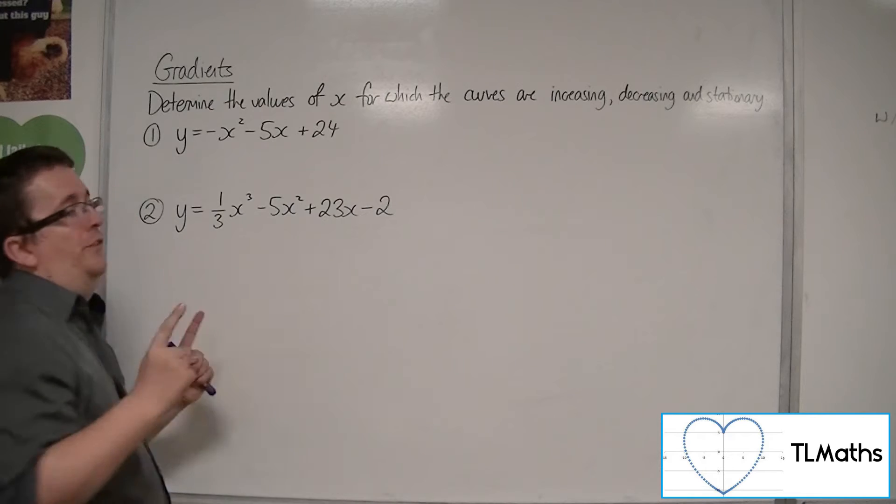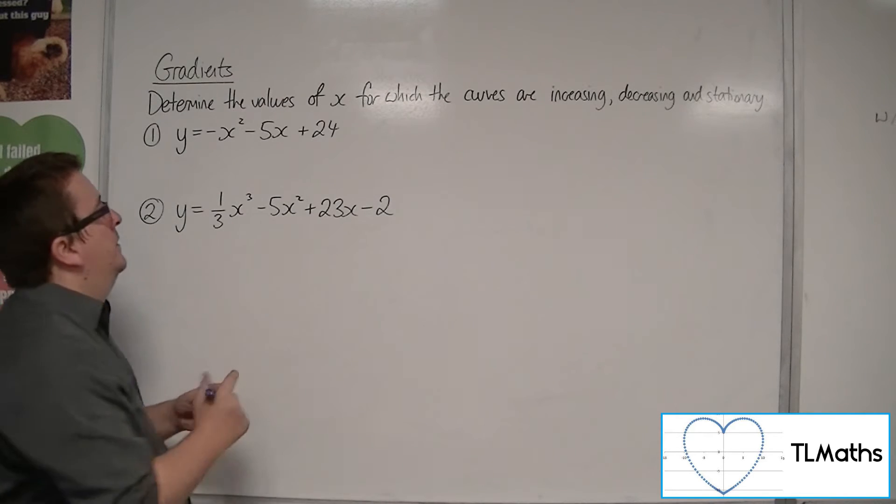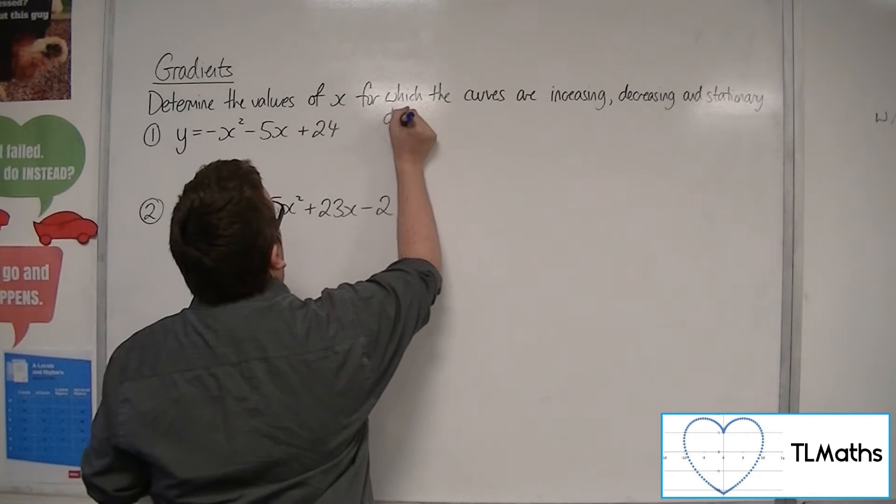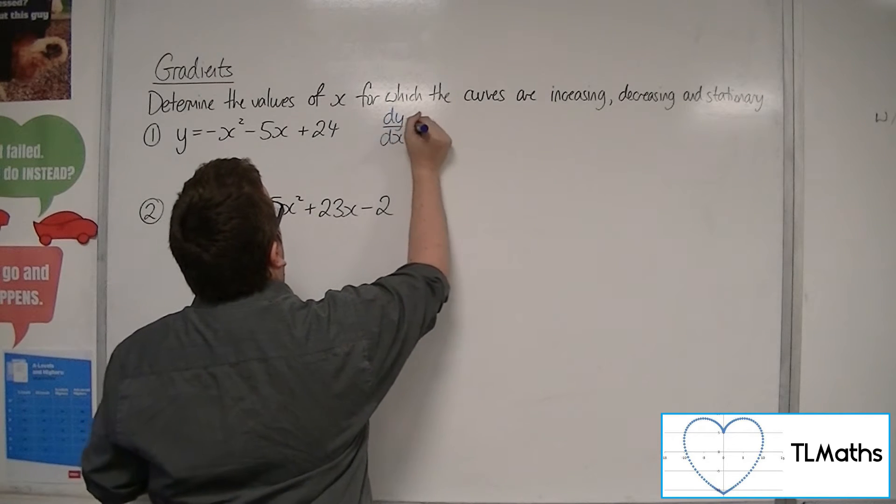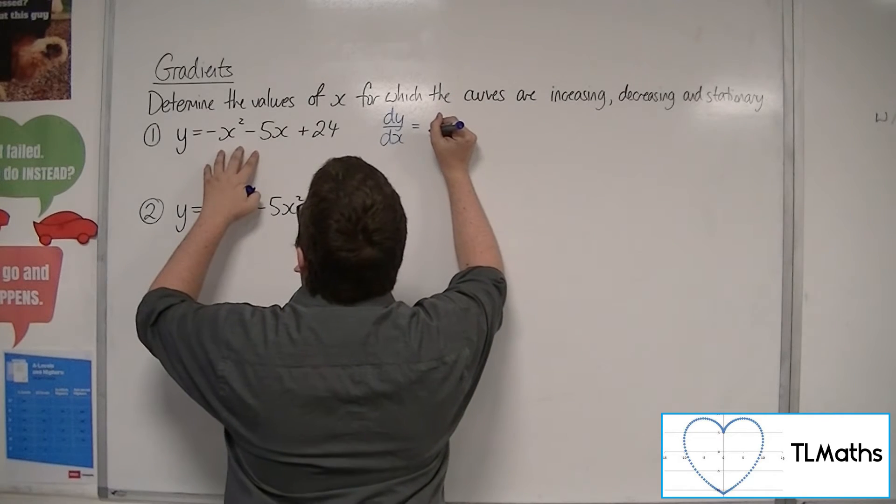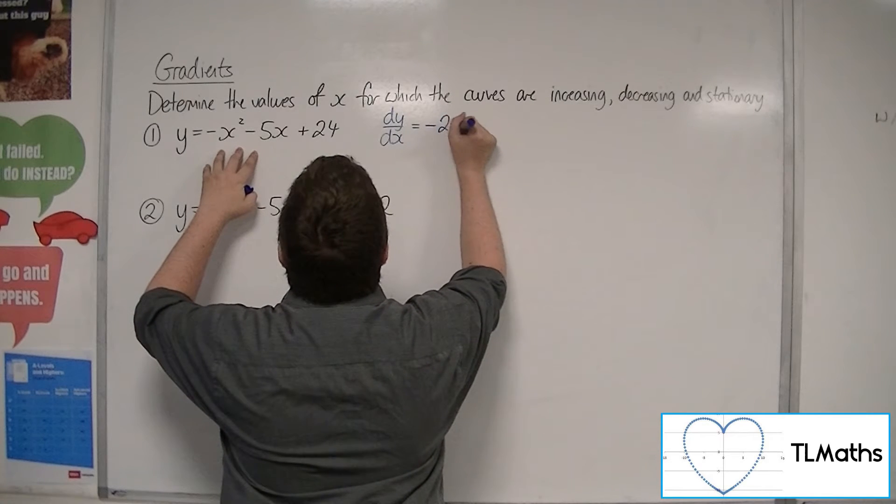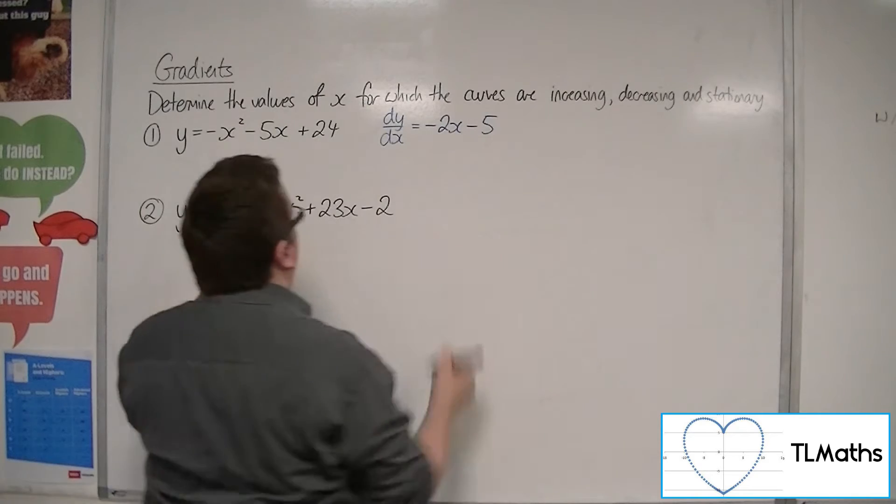So, first thing I want to do is differentiate them. I want to find dy by dx. So, that will be for this curve, this quadratic, minus 2x minus 5.